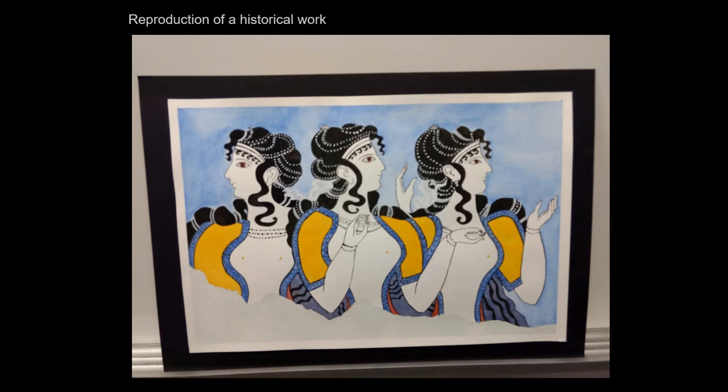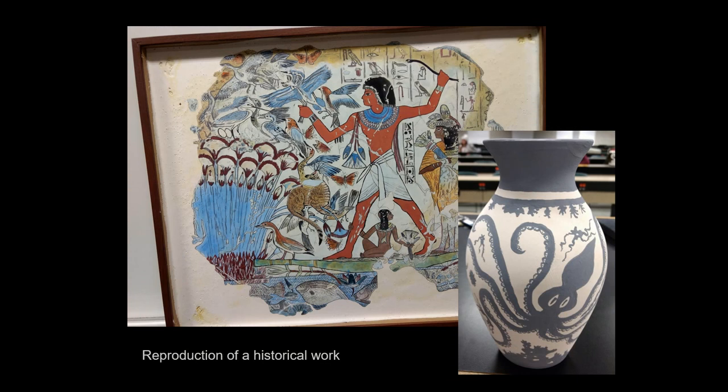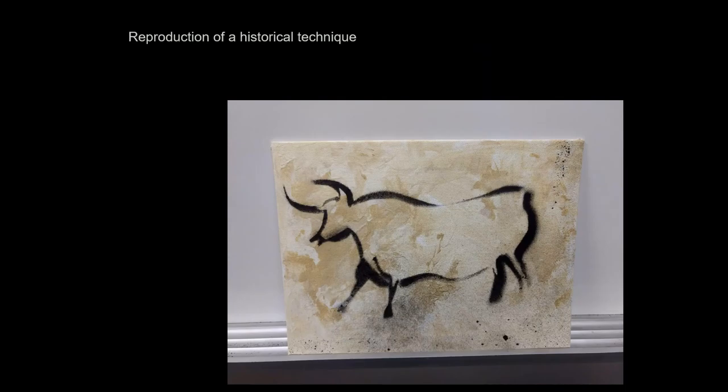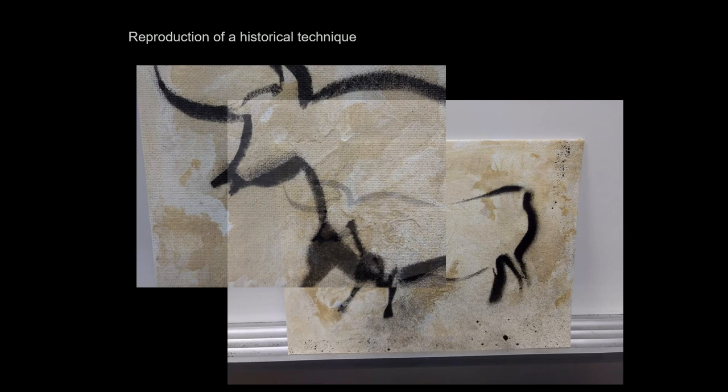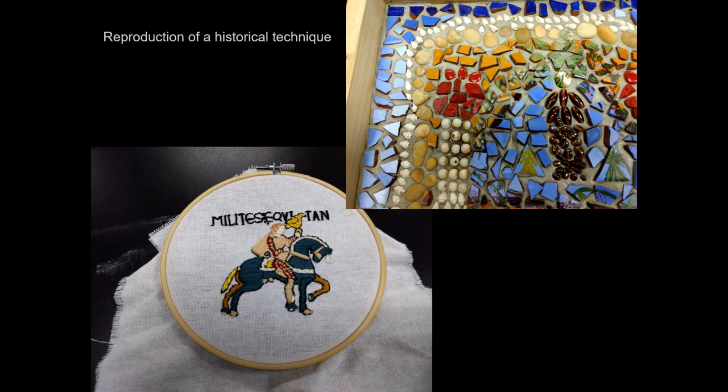For example, this is a reproduction of a very famous Minoan fresco — the student reproduced it to show what it might have looked like since the original is very fragmentary. Here's one that's an example of marine ware. Here's a reproduction of the Tomb of Nebamun — quite nice. Or you could do an examination of a historical technique: this student wanted to explore the techniques of cave paintings. Those cave paintings were actually blown onto the wall — they would put paint in their mouth and spray it onto the wall, almost like an airbrush. This student used embroidery to replicate the techniques of the Bayeux Tapestry.